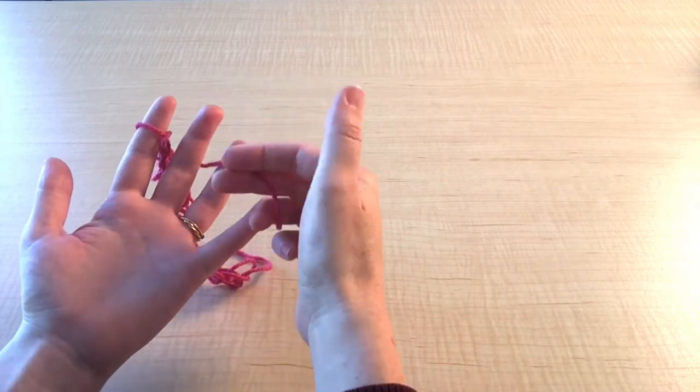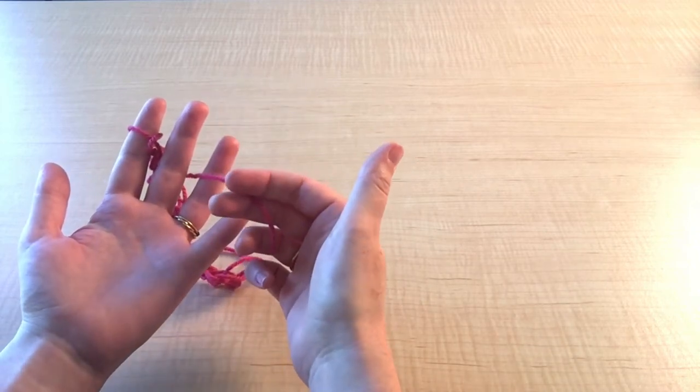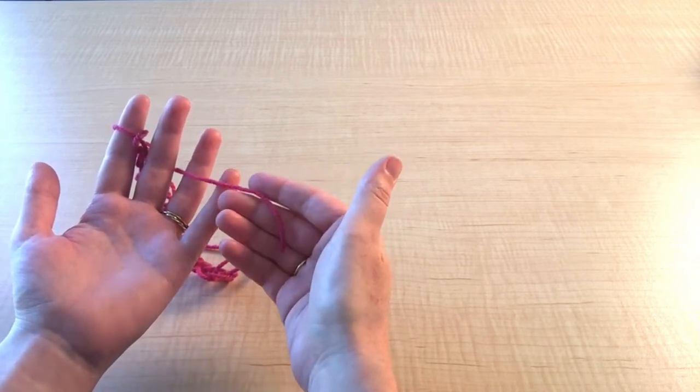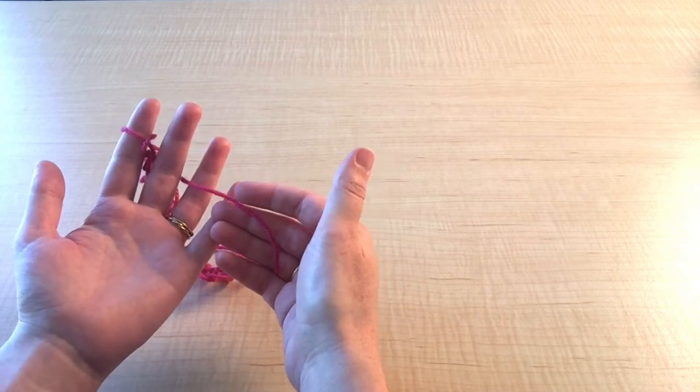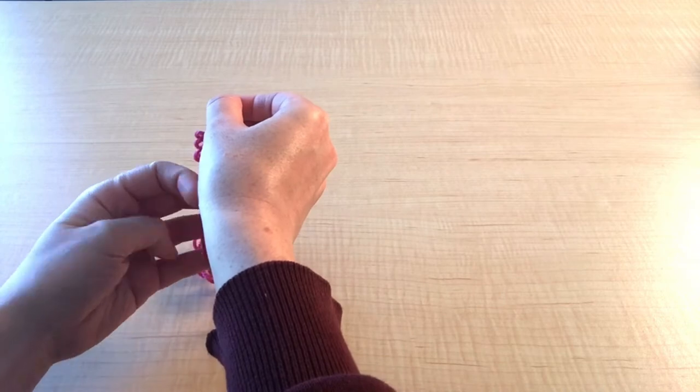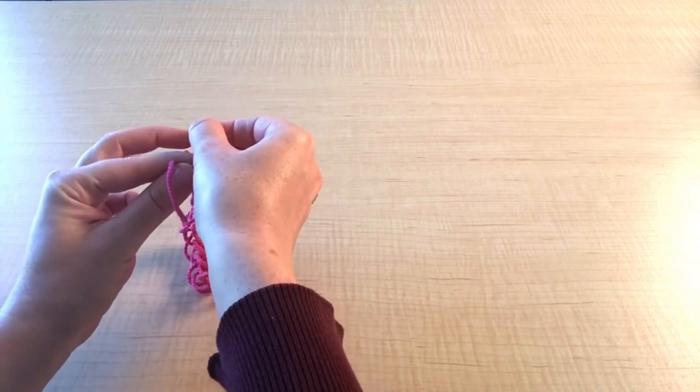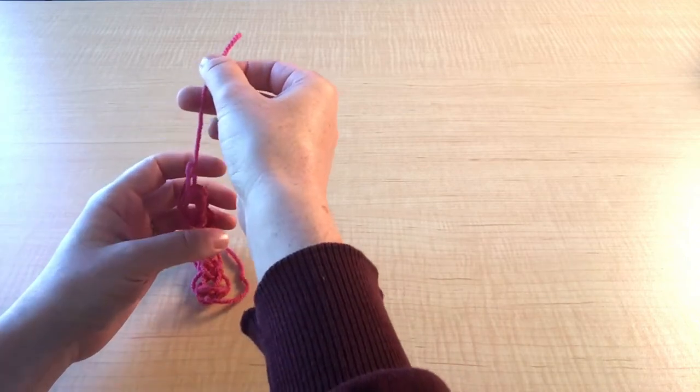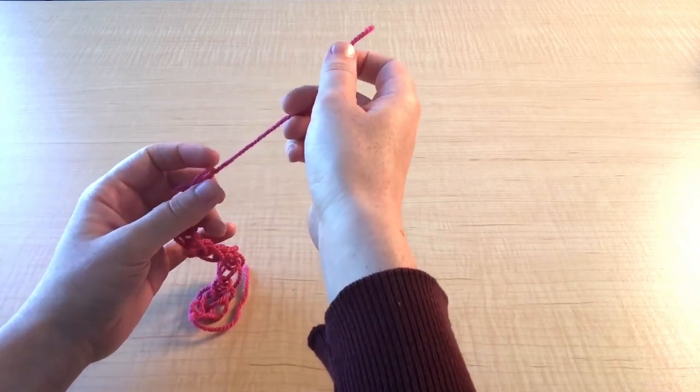At this point, if the end of your yarn is longer than five inches, cut it at about five inches from your knitting. Ours is short enough that we can leave it. Now we're going to pull the last loop off of our finger and pull our yarn through the loop so that we can make the knot to tie it off.